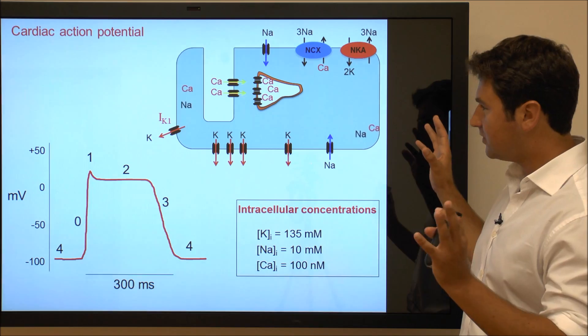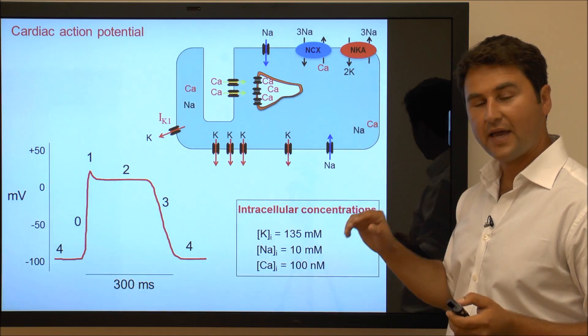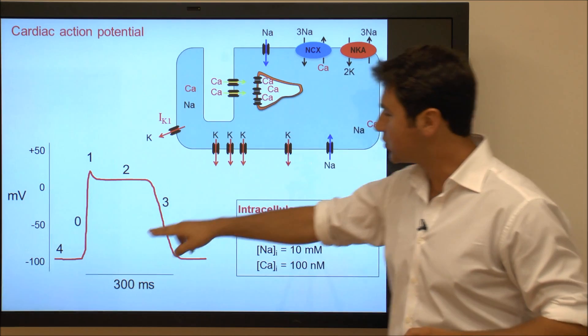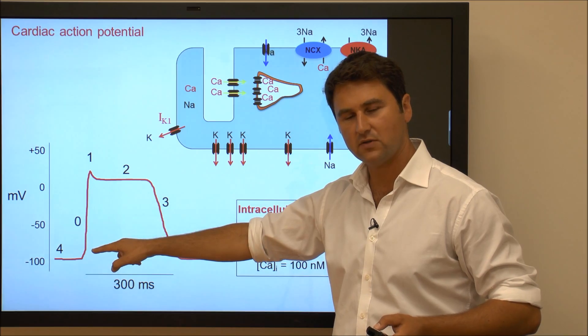Then when the cells around this myocyte get excited, some sodium and some calcium enter the cell, which shifts the action potential from minus 90 to about minus 70 millivolts.